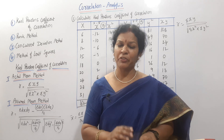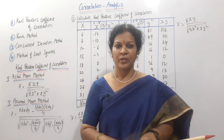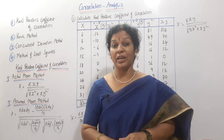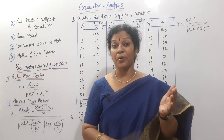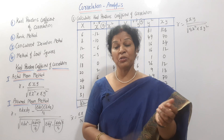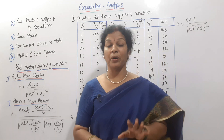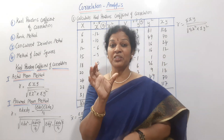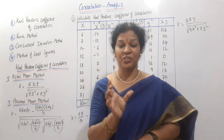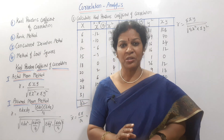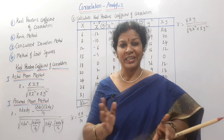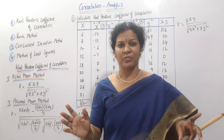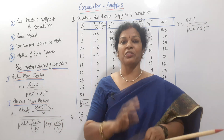Correlations have different types. Correlation can be positive, negative, or zero. A positive correlation is a good correlation. A negative correlation means an inverse relationship. Zero means there is no correlation.